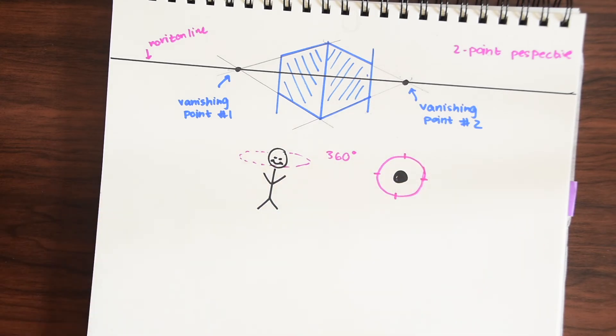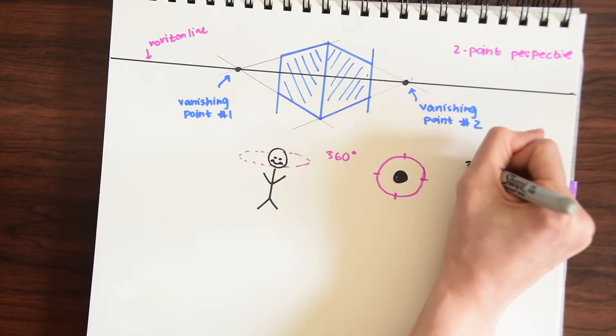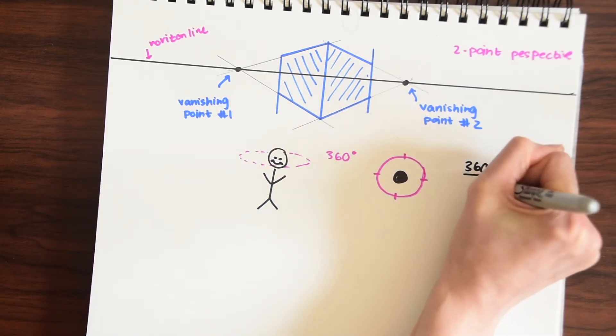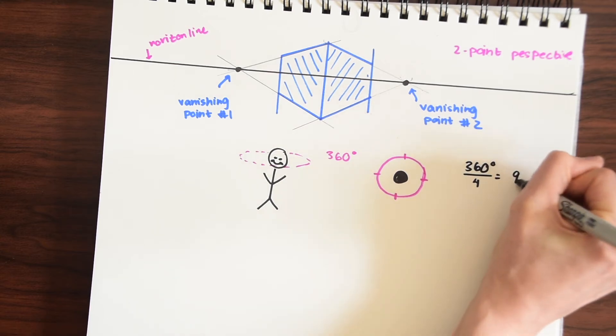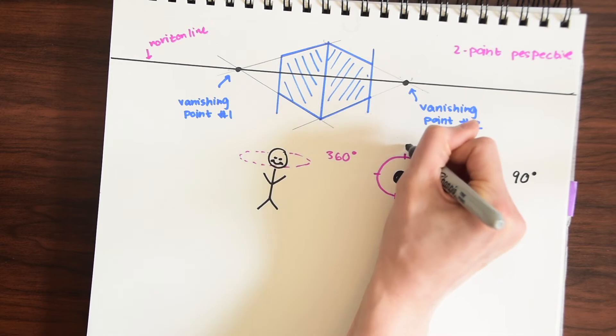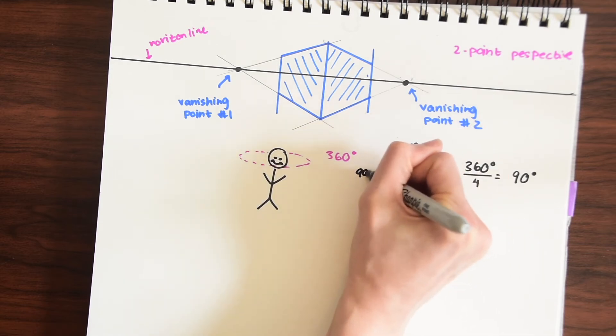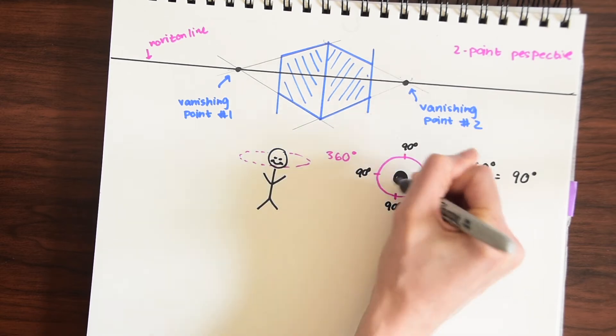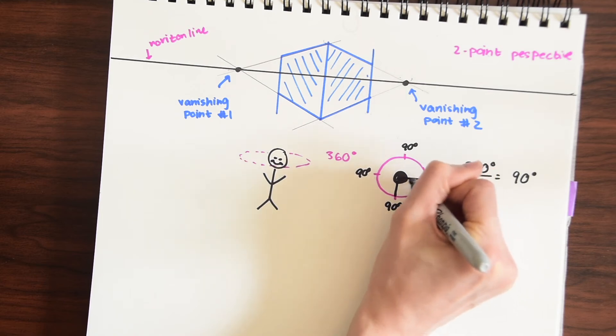So if we split this evenly that would actually be 360 degrees divided by four right which happens to be 90 degrees. So that means there's 90 degrees here, 90 degrees here. So there's a difference of 90 degrees between each view.